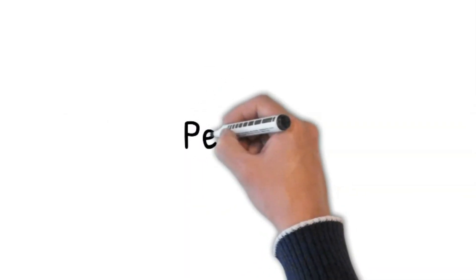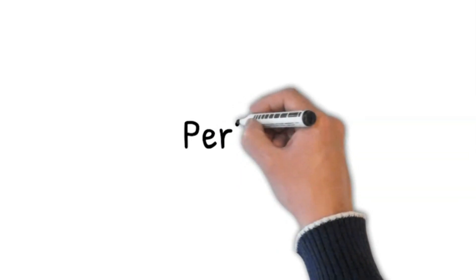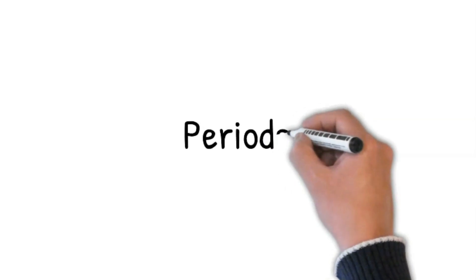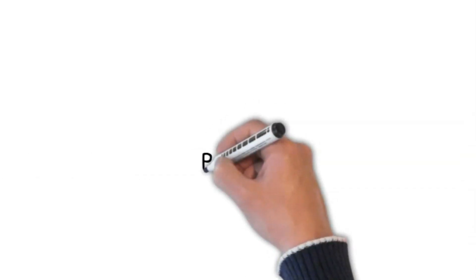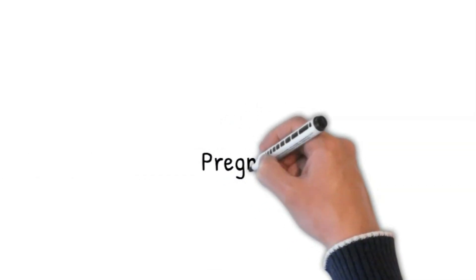When were your last periods? If more than 4 weeks, then she might be pregnant. How many days did they last? Are they irregular? Do you get pain? Any abnormal bleeding? Are you on pills? Oral contraceptive pills are a risk factor for pulmonary embolism.